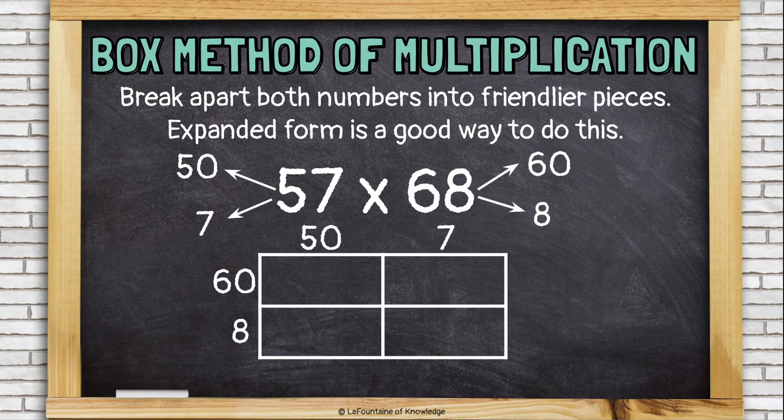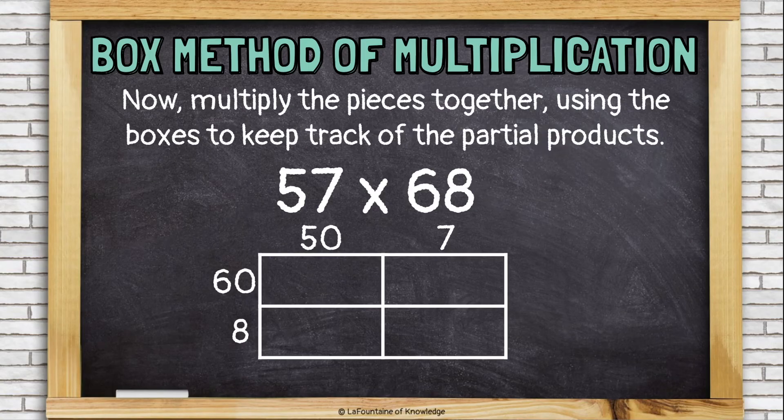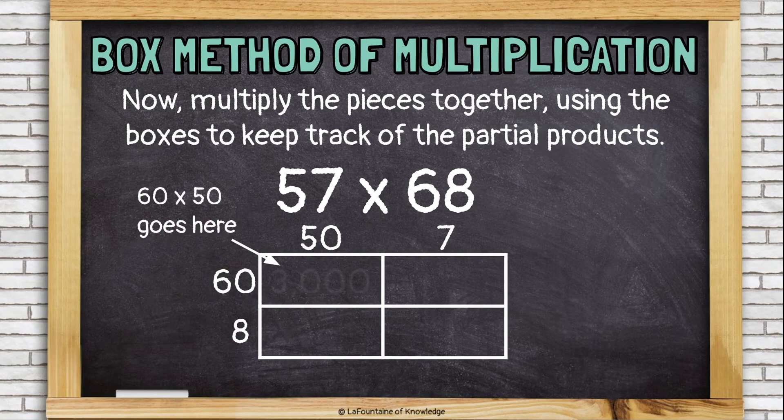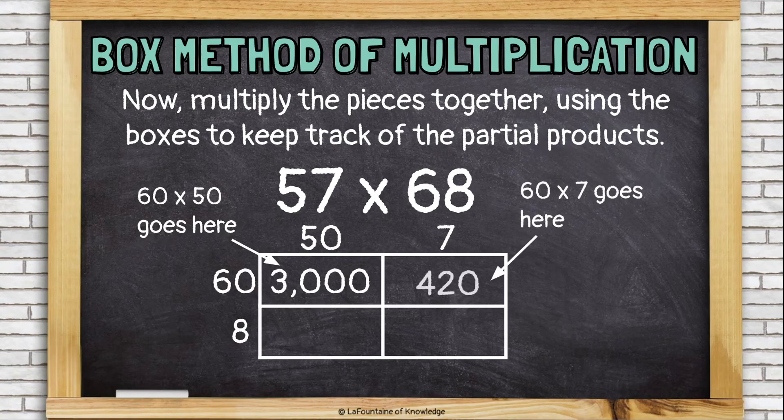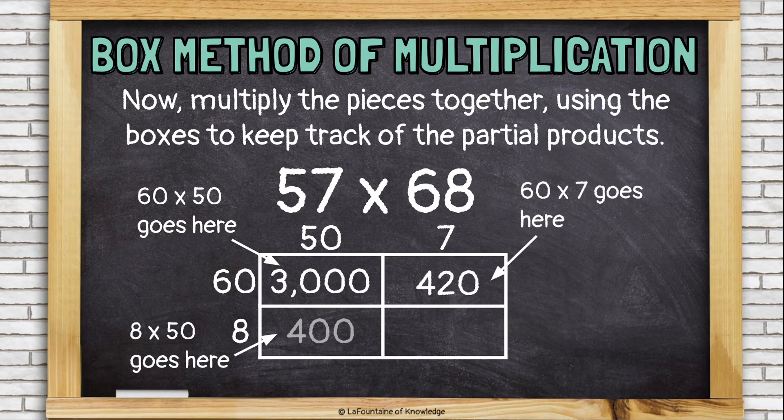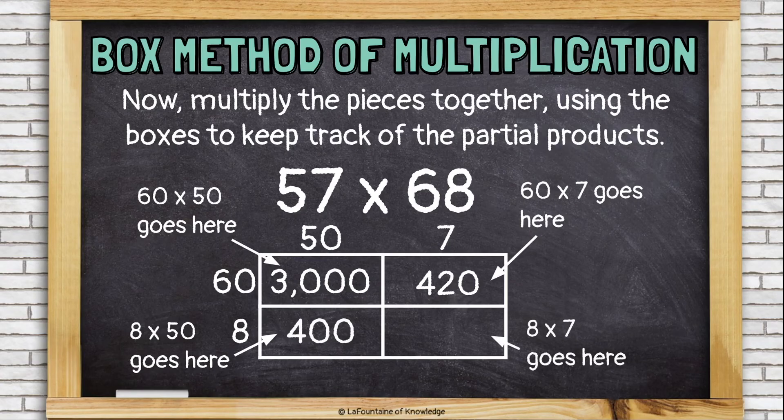Now, I multiply. 60 times 50 is going in this box. And that is 3000. 60 times 7 is going in this box. That's 420. 8 times 50 goes here. That's 400. And 8 times 7 goes here, which is 56.